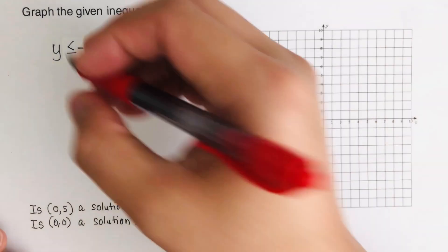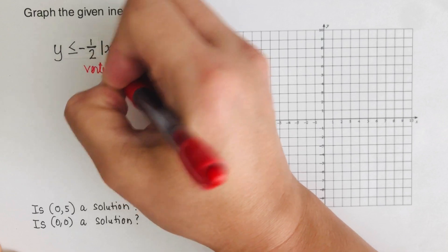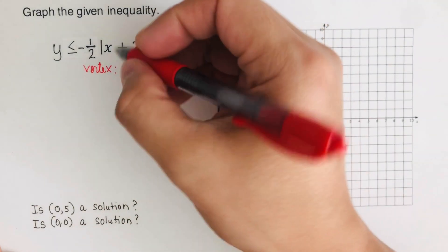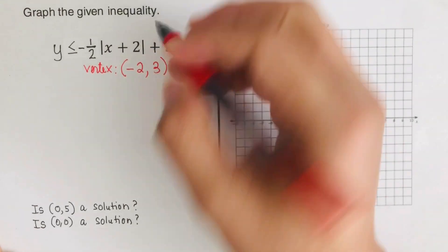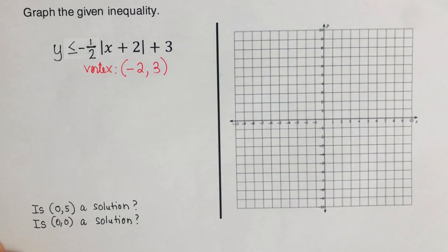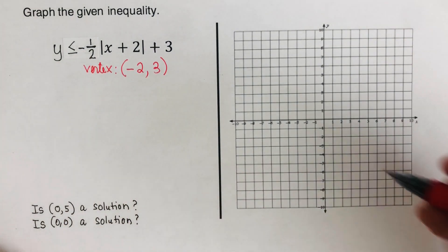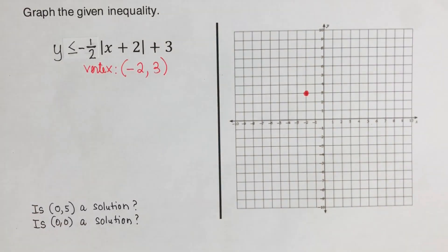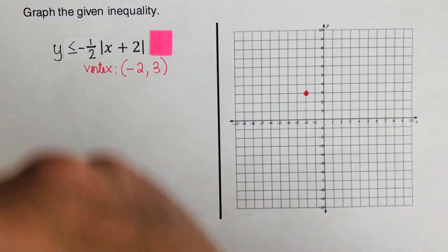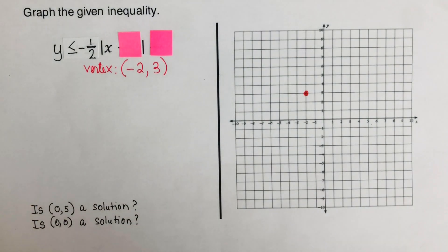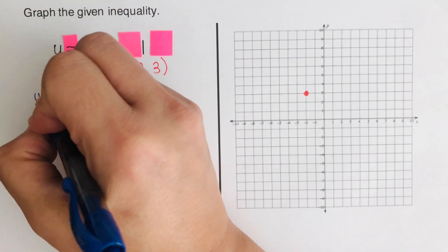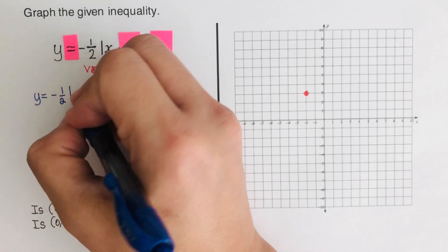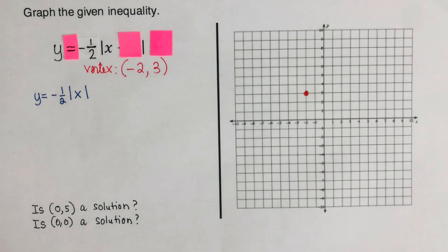We go over the second problem. First we determine the vertex — remember, switch and keep. This becomes negative two and positive three because we switch the positive to negative and keep the positive. We sketch the vertex at negative two, positive three — that's up here. Now we complete the table. The trick is to cover h and k, change the inequality to an equal sign, giving us the equation y equals negative one-half times the absolute value of x.